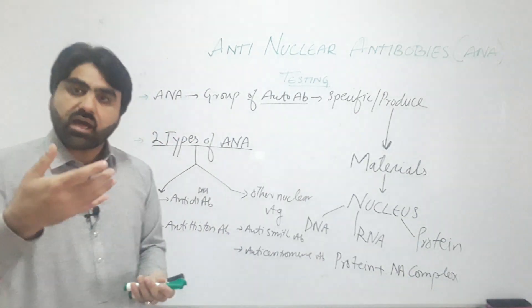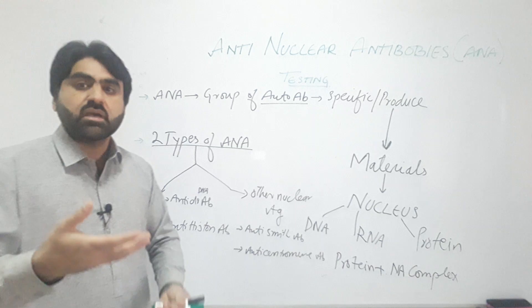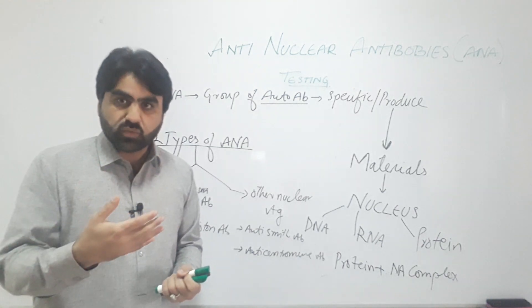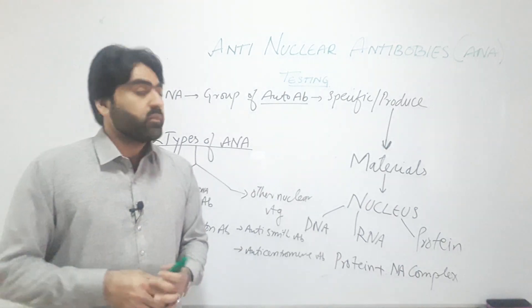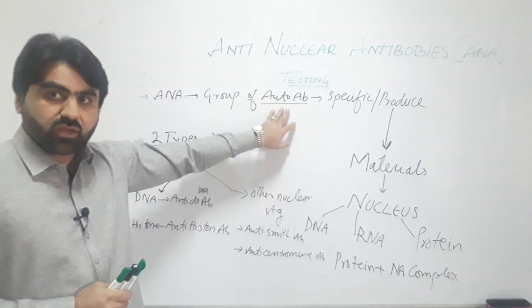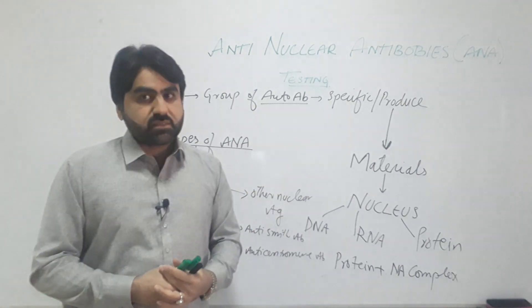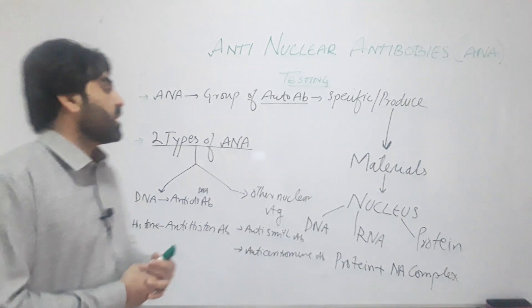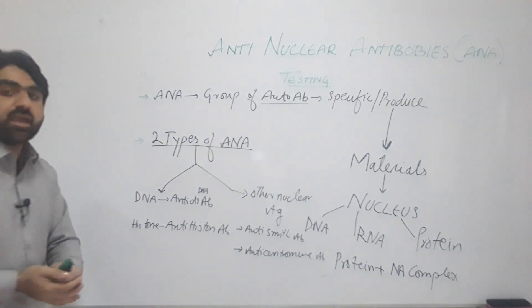Autoantibodies are those antibodies which are produced by the immune system of an individual against their own antigens. These autoantibodies act on the self-antigens of that individual and result in immunopathogenesis.